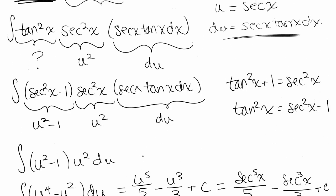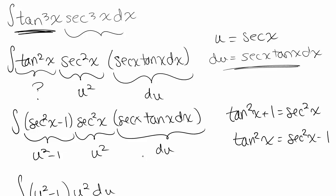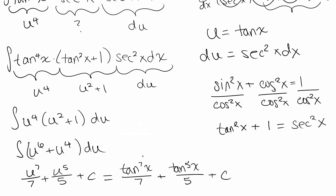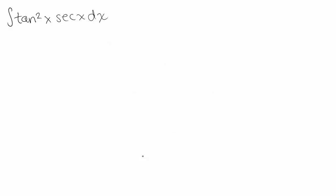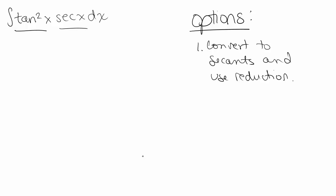When the power of tangent is odd and positive, we want to let u equal secant and save a secant tangent at the end for du. Compare that to when the power of secant is even and positive — then we want u equal tangent and save a secant squared at the end for du. Now let's look at one more example: what if tangent is even and secant is odd? The u equals secant technique worked well when tangent was odd, and the u equals tangent technique worked well when secant was even, but in this case we don't have either. So we have a couple of options: one is to convert everything to secants and use reduction formulas, and the other is to convert everything to sines and cosines, which will work for any trig integral you're given.